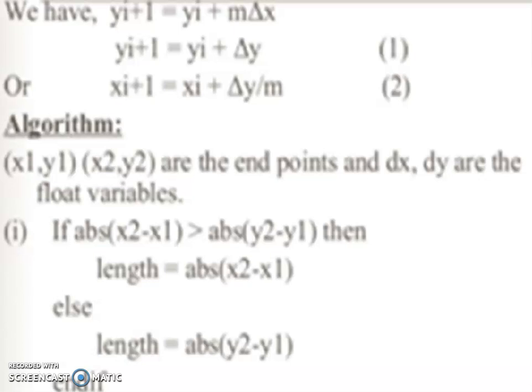In this algorithm, suppose x1,y1 and x2,y2 are the endpoints, and dx and dy are float variables. If absolute value of x2-x1 is greater than absolute value of y2-y1, then length equals absolute value of x2-x1. Else, length equals absolute value of y2-y1.